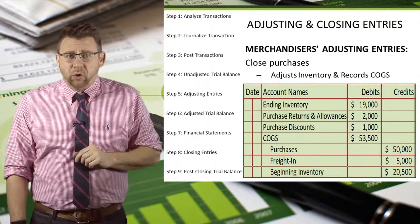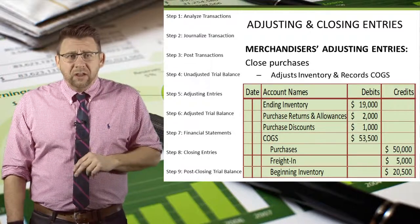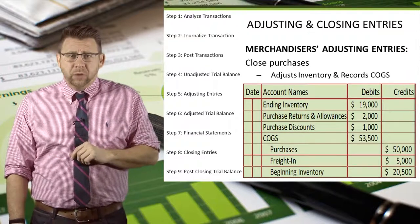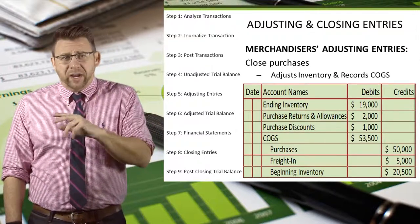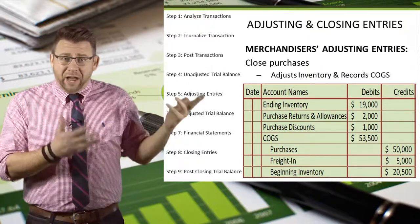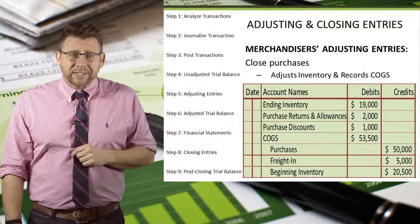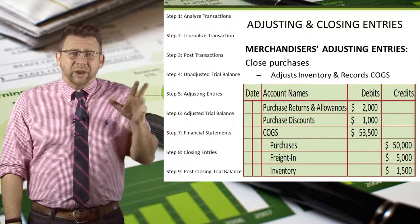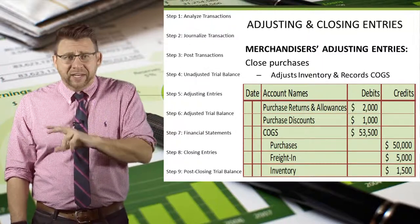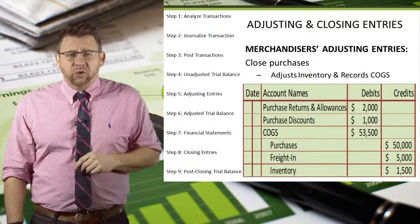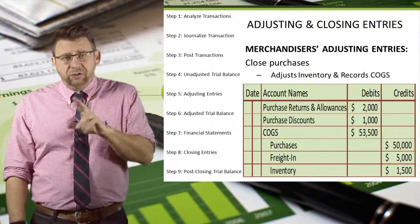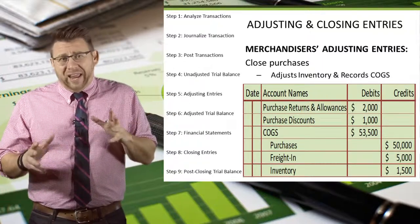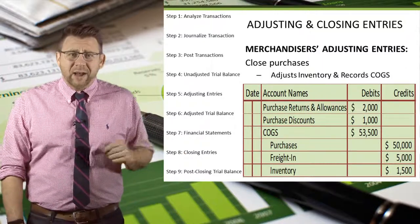Cost of goods sold needs to be recorded, so we debit that amount. Finally, the beginning inventory needs to be replaced by the ending inventory amount, so we debit ending inventory and credit beginning inventory. And with some accounting magic, that whole journal entry balances. This is the more appropriate way to make that entry — we don't actually have accounts called beginning inventory and ending inventory, so we would just credit the inventory account for $1,500 to reduce the balance from $20,500 to $19,000. That prior entry was more of an aid for your conceptual understanding; this is how it's actually done.